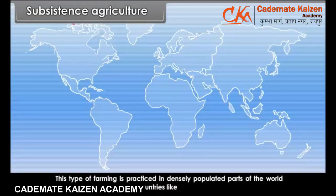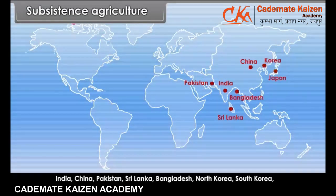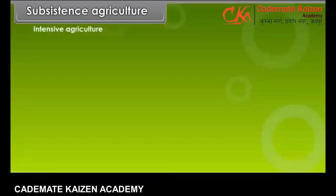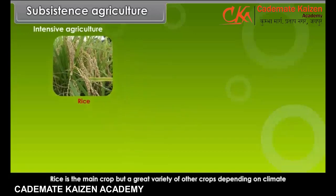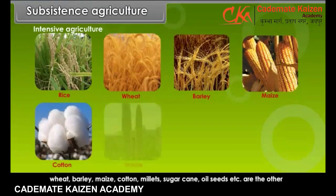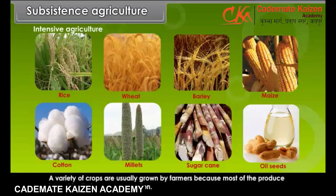The farmers settle permanently and do not move from place to place. This type of farming is practiced in densely populated parts of the world, mainly in Southeast Asian countries like India, China, Pakistan, Sri Lanka, Bangladesh, North Korea, South Korea, Japan, etc. A variety of crops are usually grown by farmers because most of the produce is used for their own consumption.